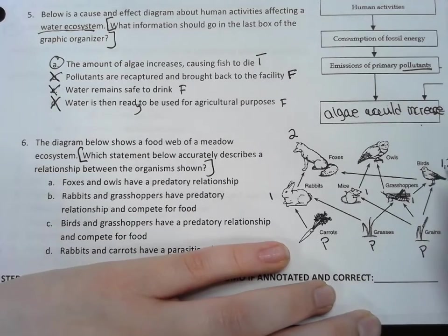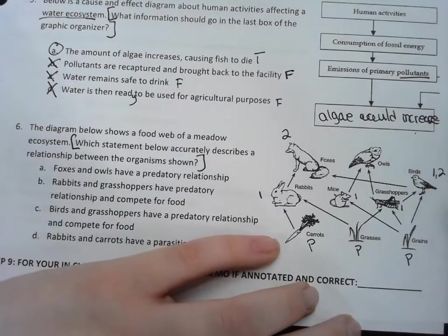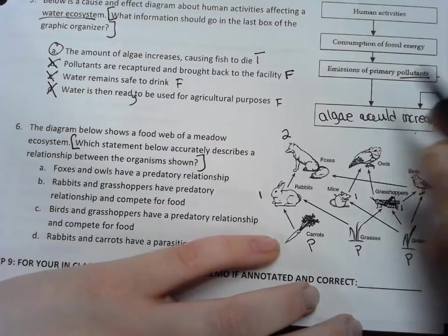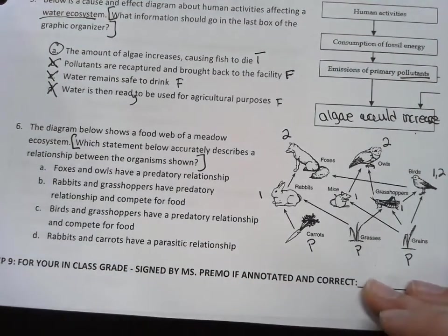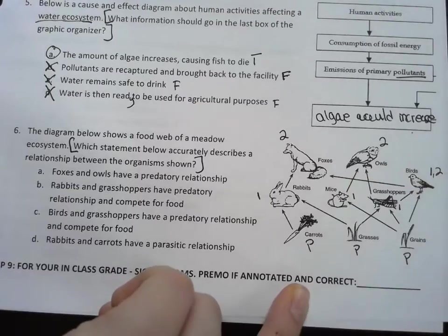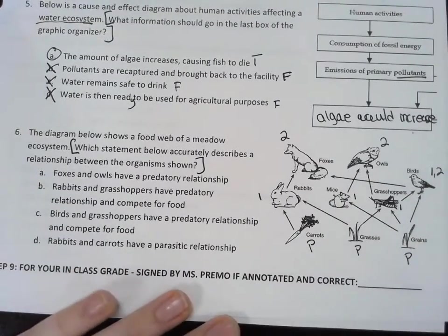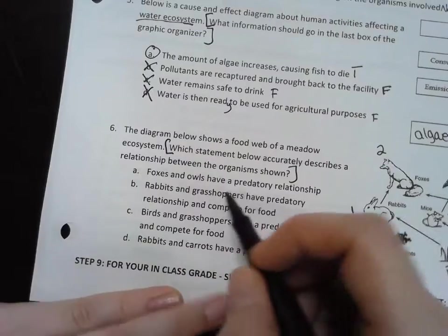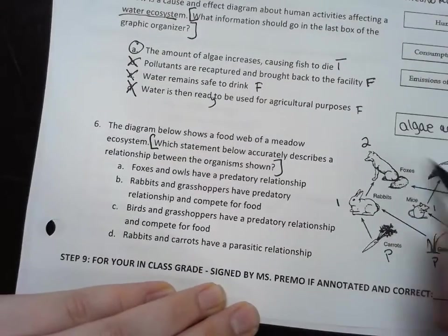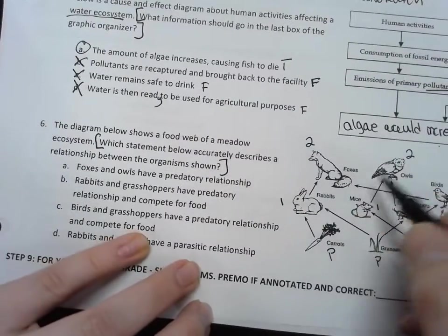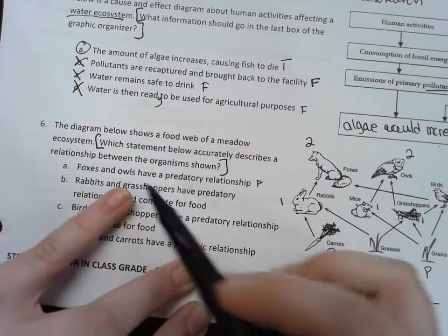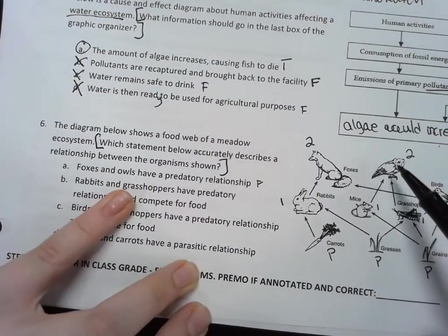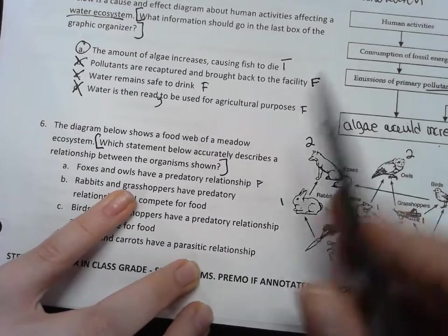So a bird is first a primary and a secondary, these are just secondary. Alright cool, so awesome, so now I've labeled that. I'm going to go through: foxes and owls have a predatory relationship - well there's no arrow connecting any of these organisms, so no, this is false. That's not happening.